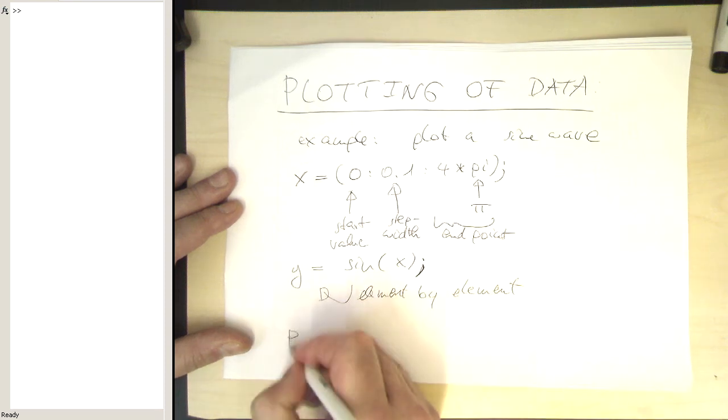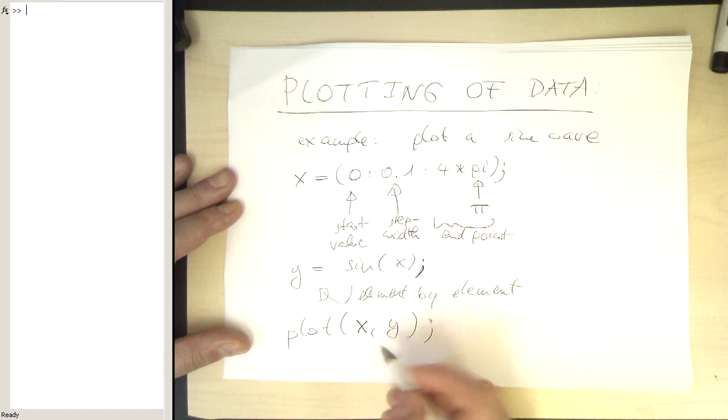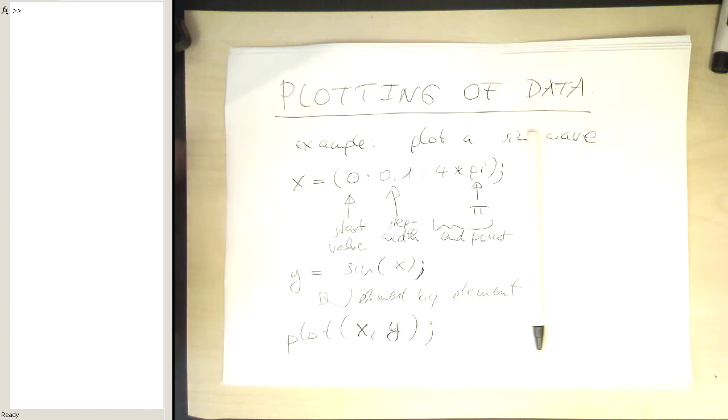So in order to plot this, now we just write plot X comma Y. They have to have the same length. And then it's taking one element from here and one element from there, plotting it and so on. So let's do that.